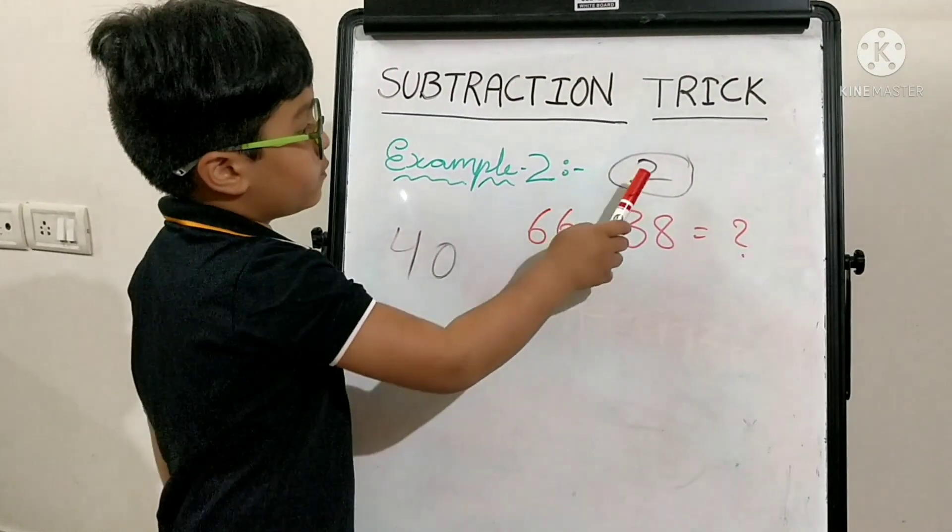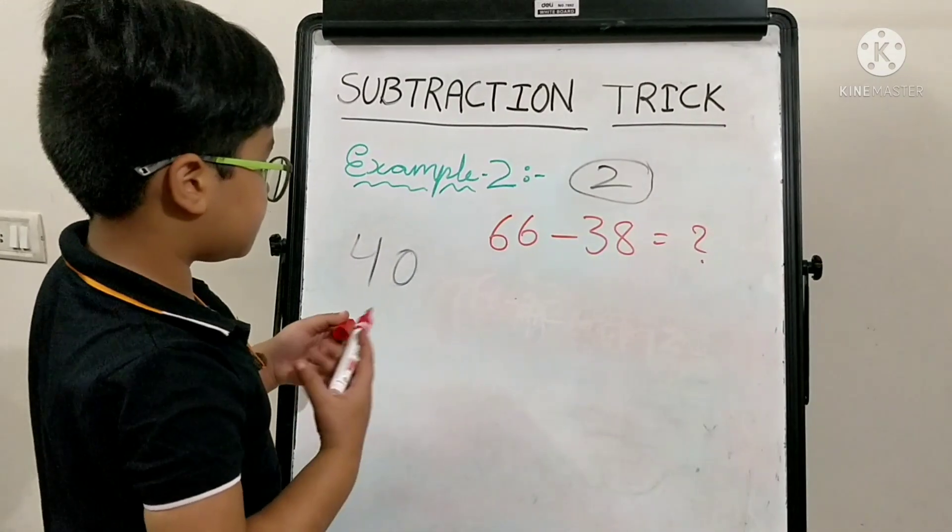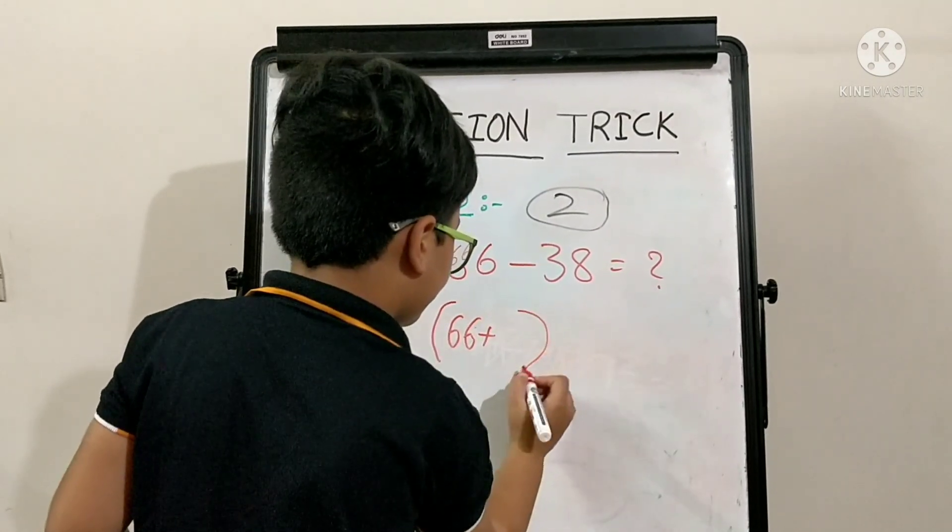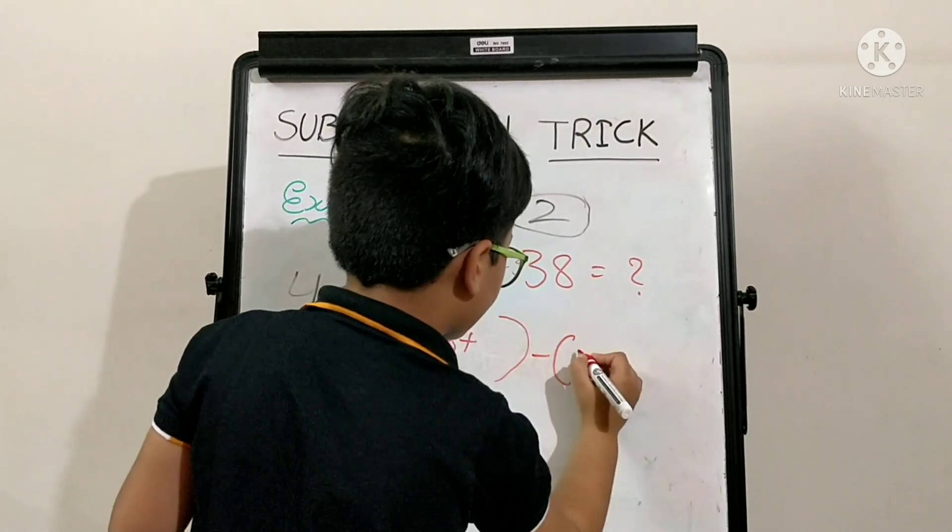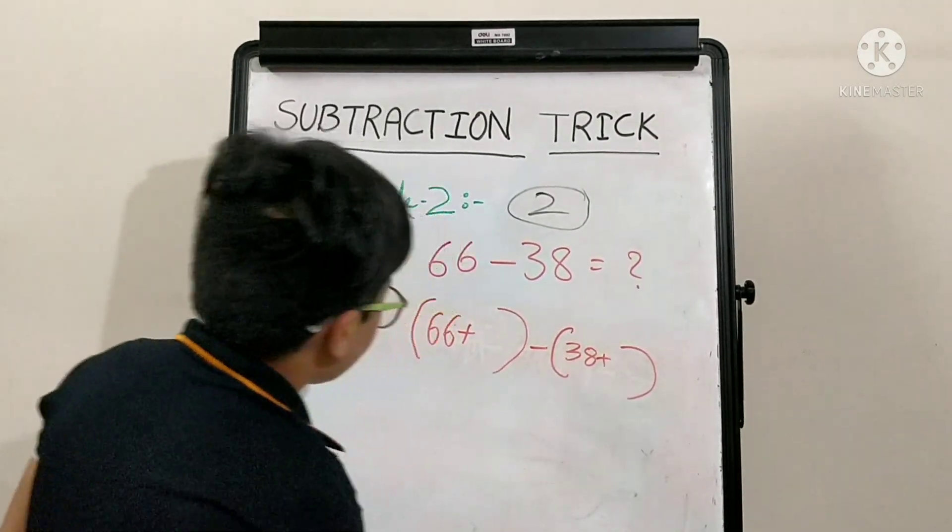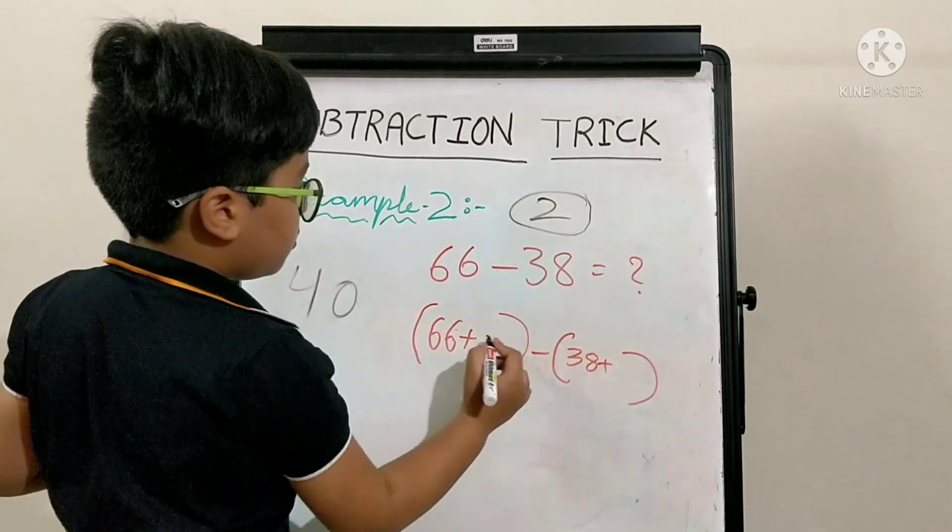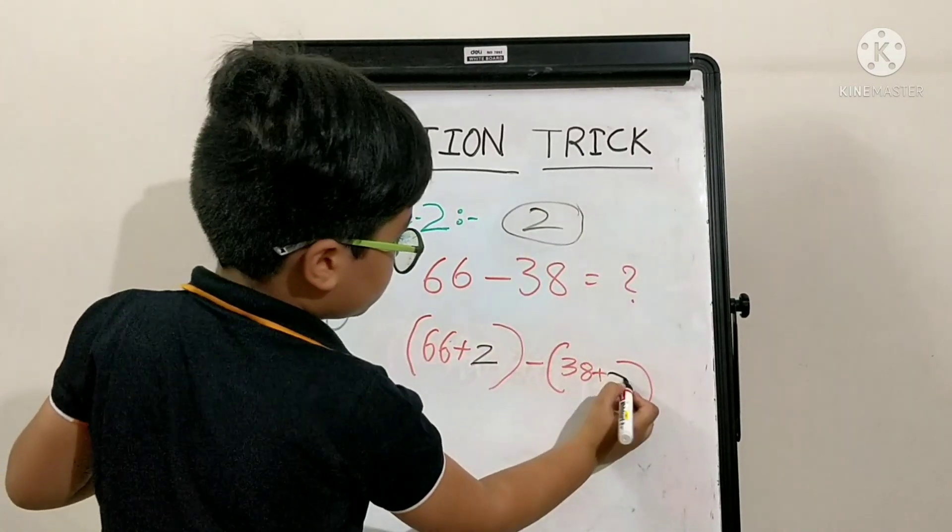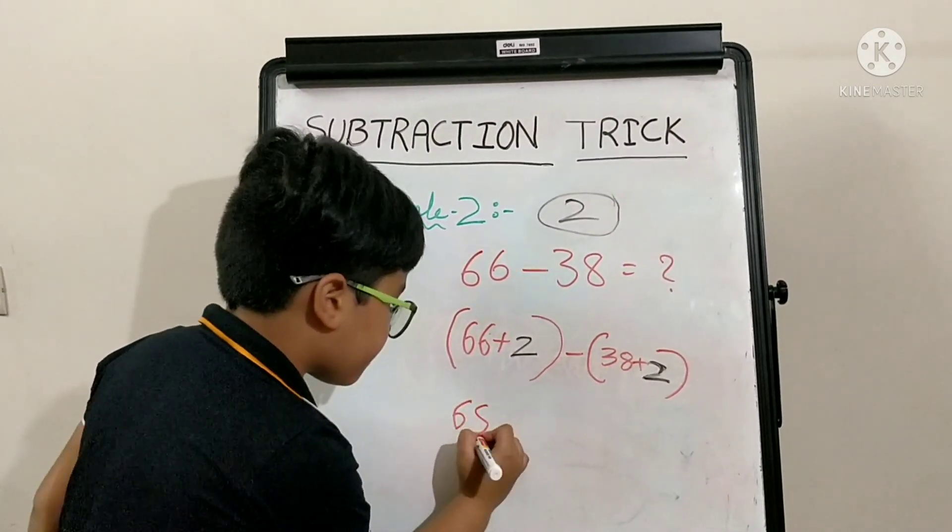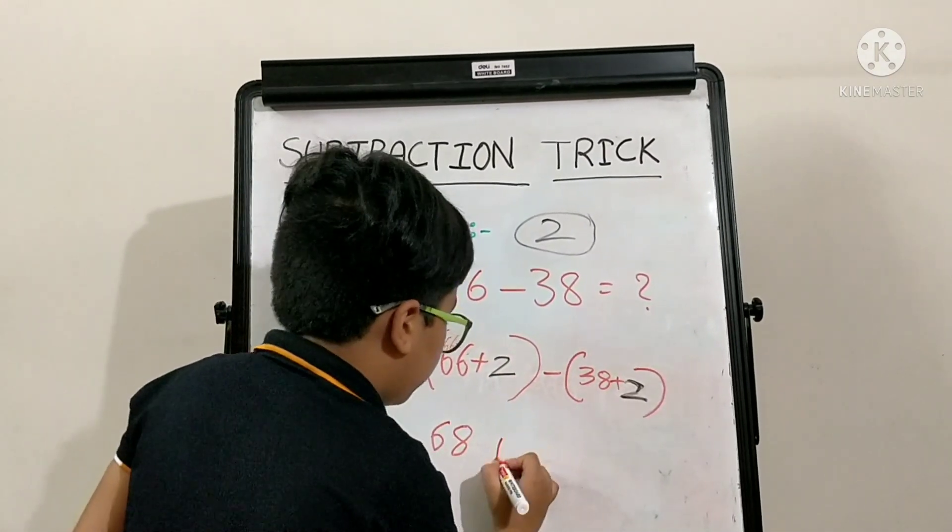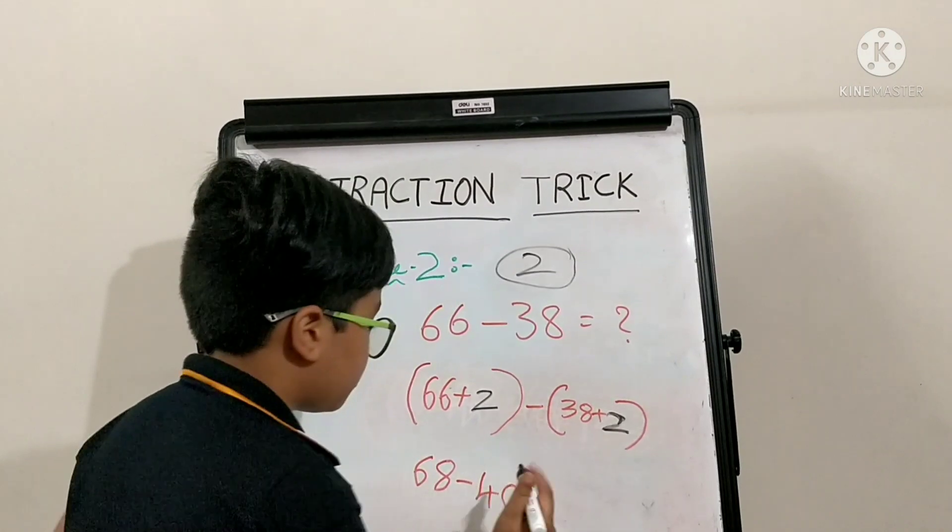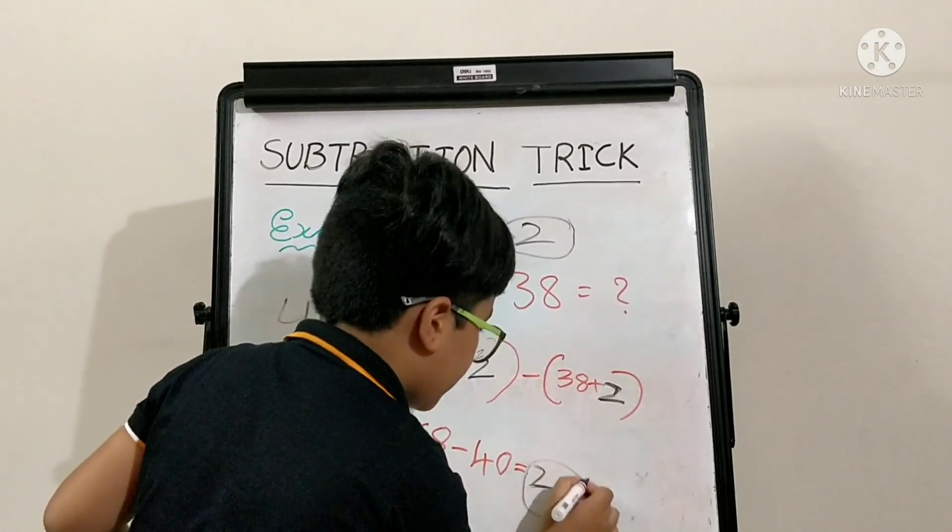The second step is, you have to add this two to these numbers. 66 plus 2 is 68. 38 plus 2 is 40. 68 minus 40 is equal to 28. Our answer is 28.